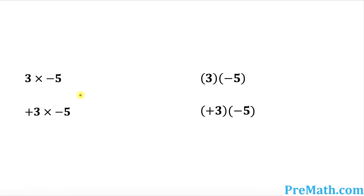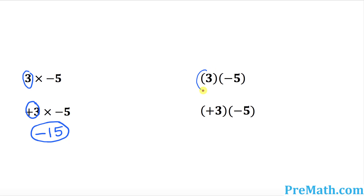How about three times negative five? Three can be written as positive three, so this is positive three times negative five. Positive times negative is negative, and three times five is 15, so the answer is negative 15. The same is true using parentheses: positive three times negative five gives negative 15.